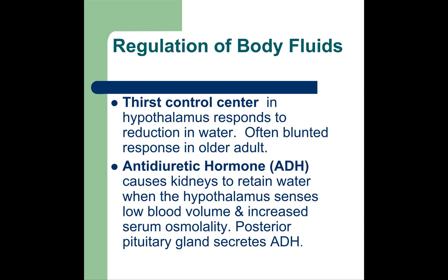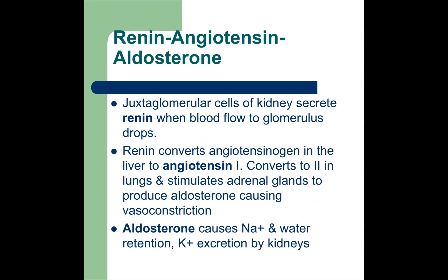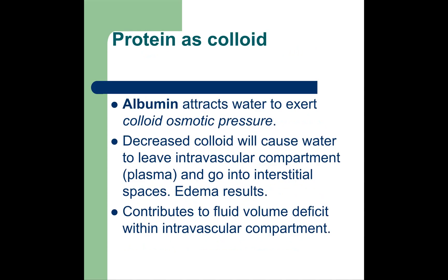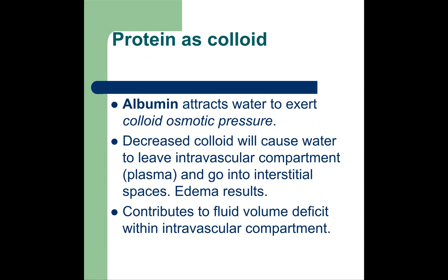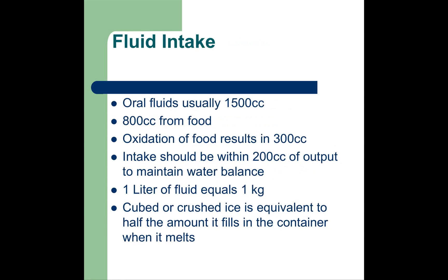Other regulators of body fluids include the thirst center in the hypothalamus, which responds to reduced water by triggering thirst — though it works less effectively in older adults. Anti-diuretic hormone (ADH), released when the hypothalamus senses low pressure or volume, causes the kidneys to retain water. The renin-angiotensin system regulates blood volume and pressure. Proteins like albumin attract water and can be administered to help remove excess fluid from the body.